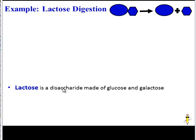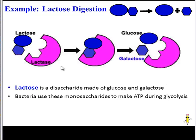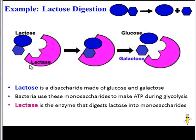Lactose is the disaccharide, the double sugar, and the simple sugars it can be broken down into — glucose and galactose — are used to make ATP. Lactase is the enzyme that can help digest lactose. And here we can see the lactase bind to the substrate, catalyze a reaction, and then release the products, the two sugars.